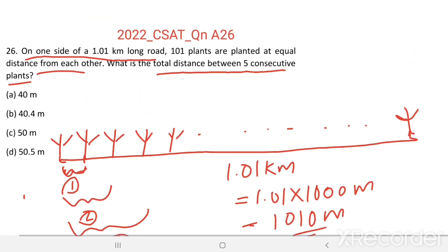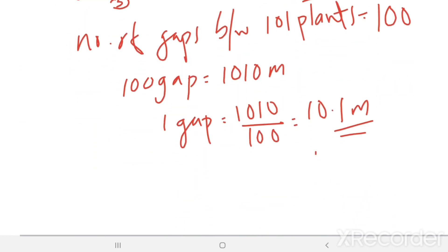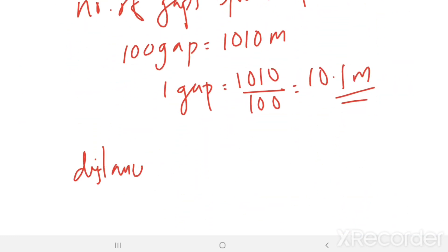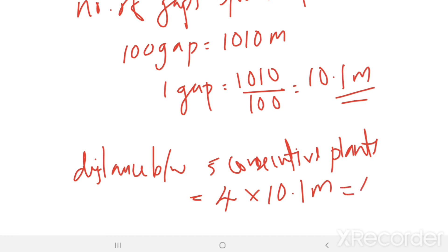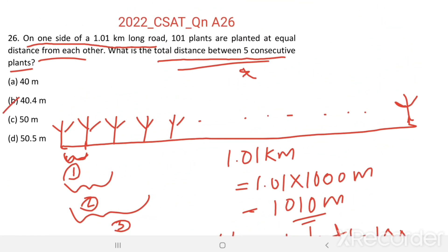So here we need to find the total distance between 5 consecutive plants. Number of gaps between 5 consecutive plants equals 5 minus 1, that is 4. And each gap equals 10.1 m. Then distance equals 4 × 10.1 equals 40.4 m. Distance between 5 consecutive plants equals 40.4 m. Option B is the right answer.